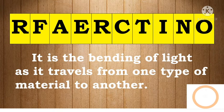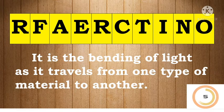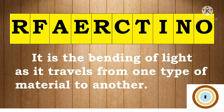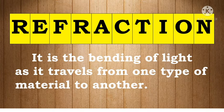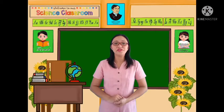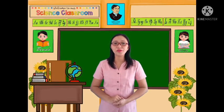Number 5: It is the bending of light as it travels from one type of material to another. The answer is: Refraction. Very good, class! You mastered our previous lesson. Now, let's move on!